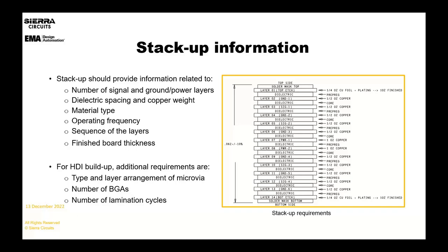Another note on your stack up: if you say your solder mask must be a minimum of, let's say, one mil, then a good fabricator will try and beat the one mil requirement. That might mean we have to do two coats of solder mask, which you might inadvertently be paying for, or it would take more process steps. So be careful of what you put in your stack up as the minimum requirements.